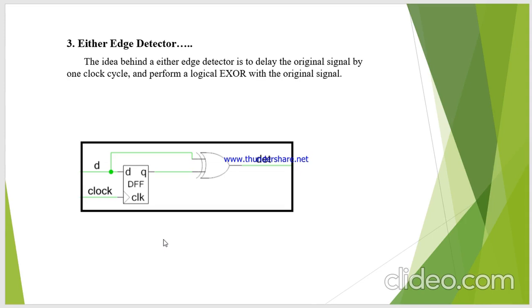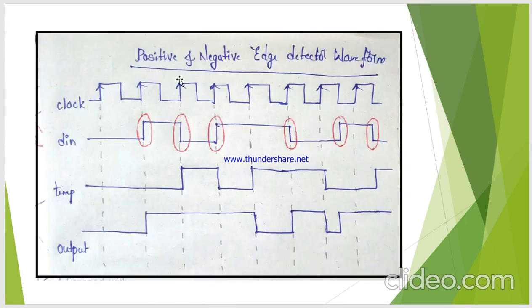I will explain this with an example waveform. I have my clock signal. My D flip-flop will act according to the clock — that means at every positive edge of the clock, it will produce the Q output with respect to the D input. And I have my D input. Now I need to perform the logical XOR operation between the D input and the TMP signal.